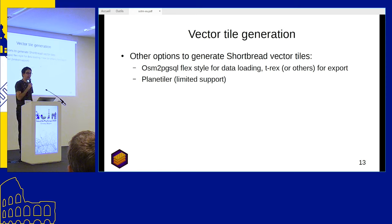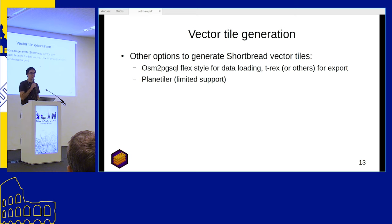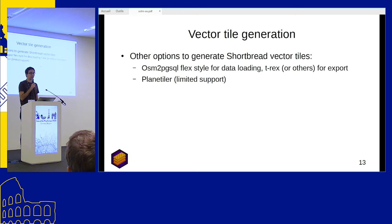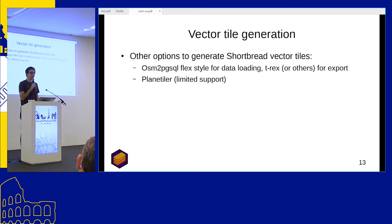TileMaker isn't the only option to create Shortbread vector tiles. You can also create them using a special flex script for osm2pgsql for data loading and then use TREX or any other software to export vector tiles from the database. Or you can use PlanoTile, but PlanoTile has limited Shortbread support — it is not able to sort features in the layers, so you will end up with a wrong rendering order in some rendering libraries, for example MapNIC.